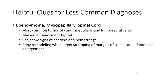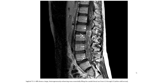Ependymoma, myxopapillary type, is the most common tumor of the conus medullaris and lumbar sacral canal. Features include avid enhancement, cap sign of necrosis and hemorrhage, bone remodeling when large, scalloping of vertebral margins, and spinal canal enlargement. Sagittal T1 post-contrast MRI shows an enlarged heterogeneous enhancing mass essentially filling the caudal thecal sac from T12 through L5, indicated by the solid arrow.